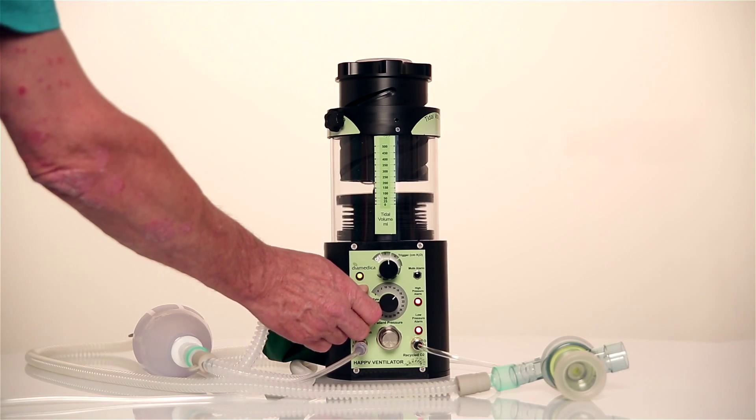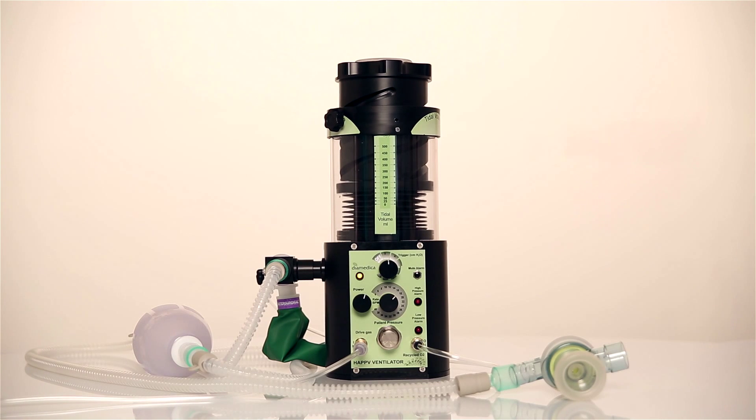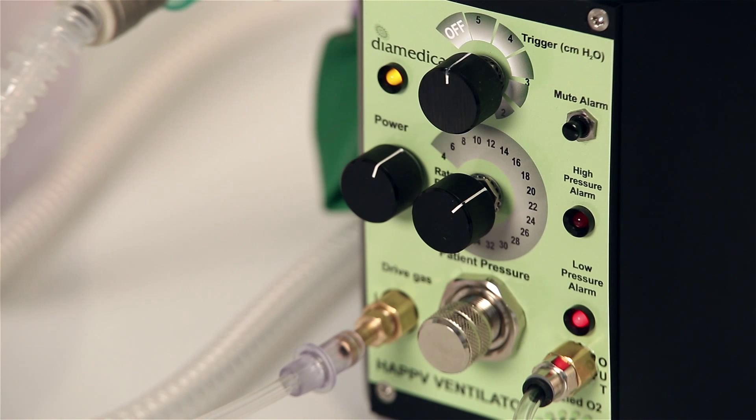When the ventilator is switched on, initially all three lights show and the low pressure alarm remains on until there is pressure in the circuit.